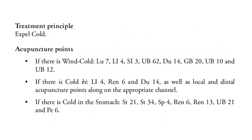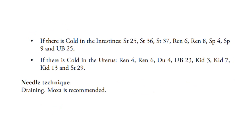Treatment principle: expel cold. If there is wind cold, we use Lung 7, LI4, SI3, UB62, DU14, GB20, Bladder 10, and Bladder 12. If there is cold Bi, we use LI4, REN6, and DU14, as well as local and distal acupuncture points along the appropriate channel. If there is cold in the stomach, we use Stomach 21, Stomach 34, Spleen 4, REN6, REN13, Bladder 21, and Pericardium 6. If there is cold in the intestines, we use Stomach 25, Stomach 36, Stomach 37, REN6, REN8, Spleen 4, Spleen 9, and Bladder 25.